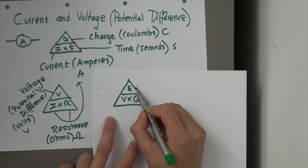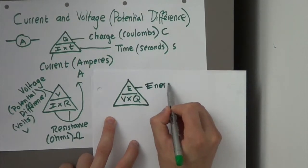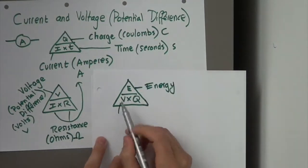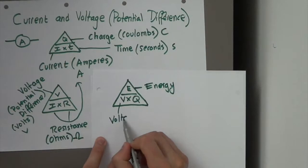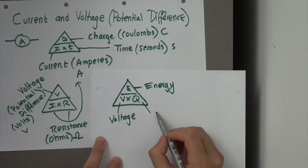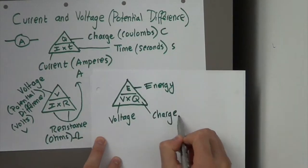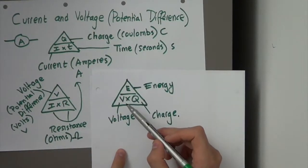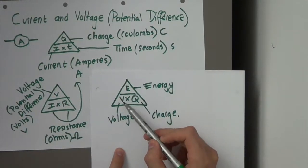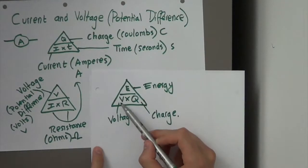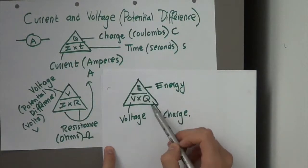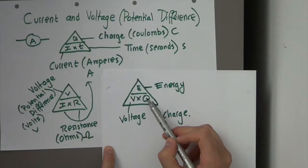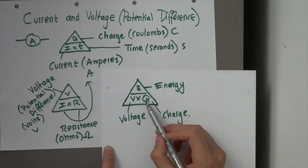Here's the other equation. This is energy. This is voltage again, which we know. Q, we know charge. So, this equation is a much better description of what voltage is. So, what is voltage? Voltage is essentially the amount of energy each charged particle has. So, the amount of energy each electron carries.